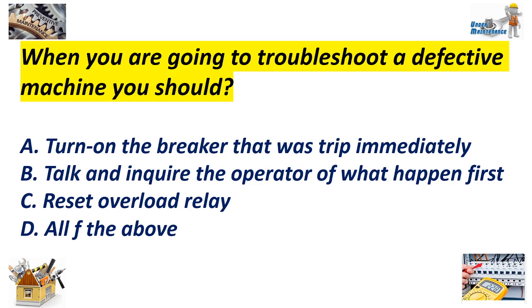When you are going to troubleshoot a defective machine, you should: A. Turn on the breaker that was tripped immediately, B. Talk and inquire the operator of what happened first, C. Reset the overload relay, D. All of the above. Answer: B.